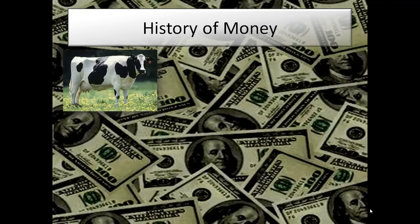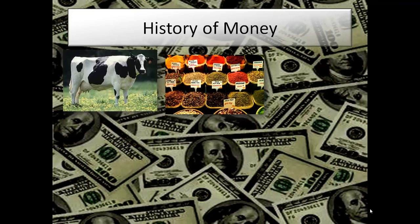Christopher Columbus was not looking for new land. He was looking for a path to get spices because spices were so valuable. Some parts of the world used spices as different forms of currency because you could weigh them, they were easy to transport, they weren't large, and they were scarce — so that made them valuable.